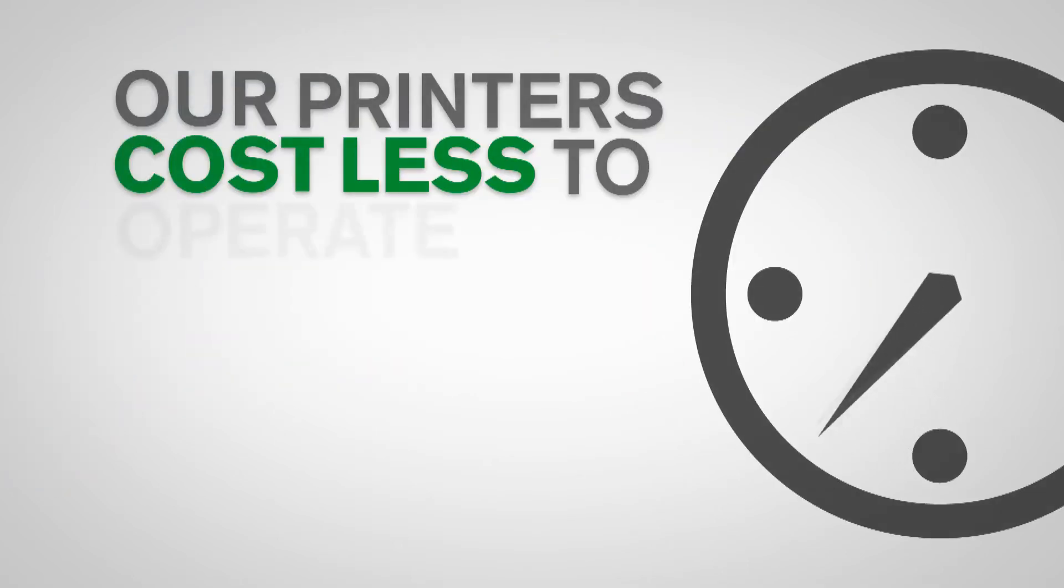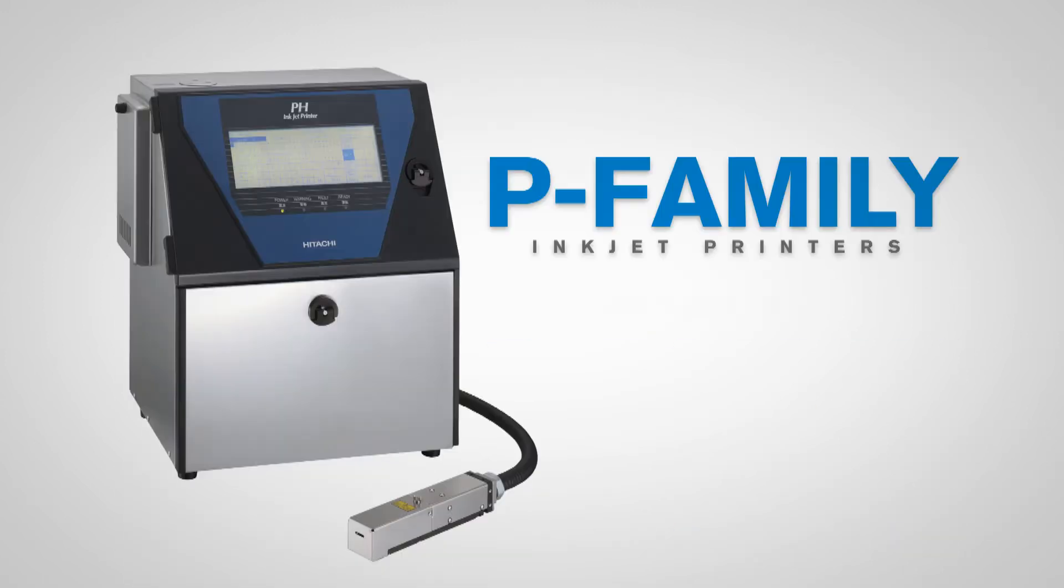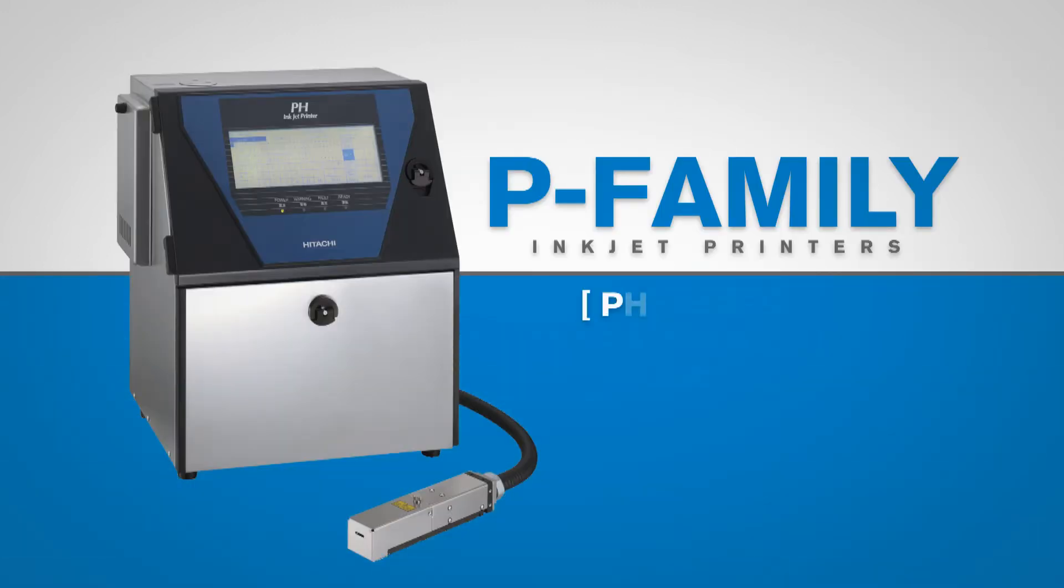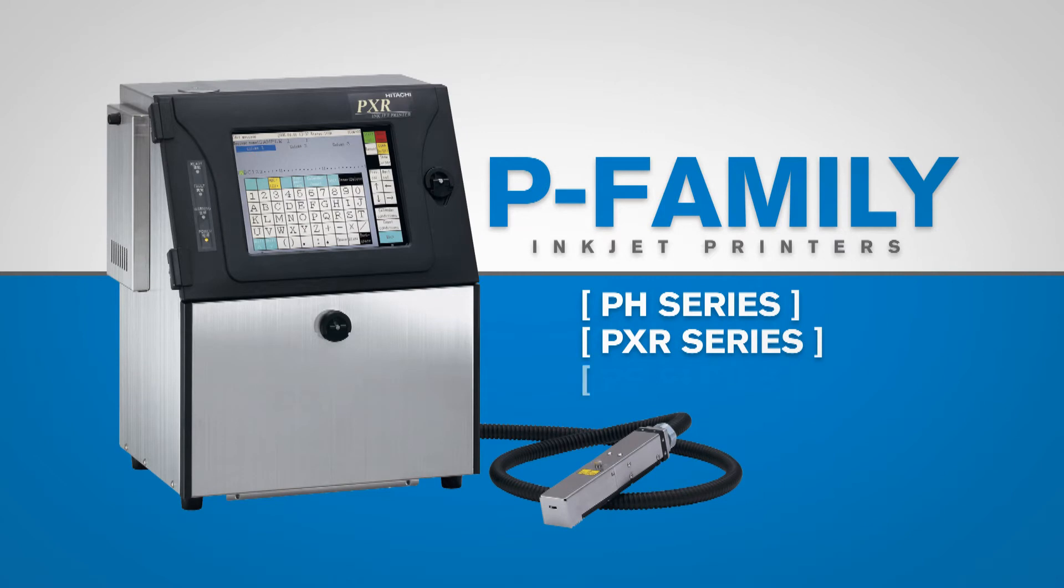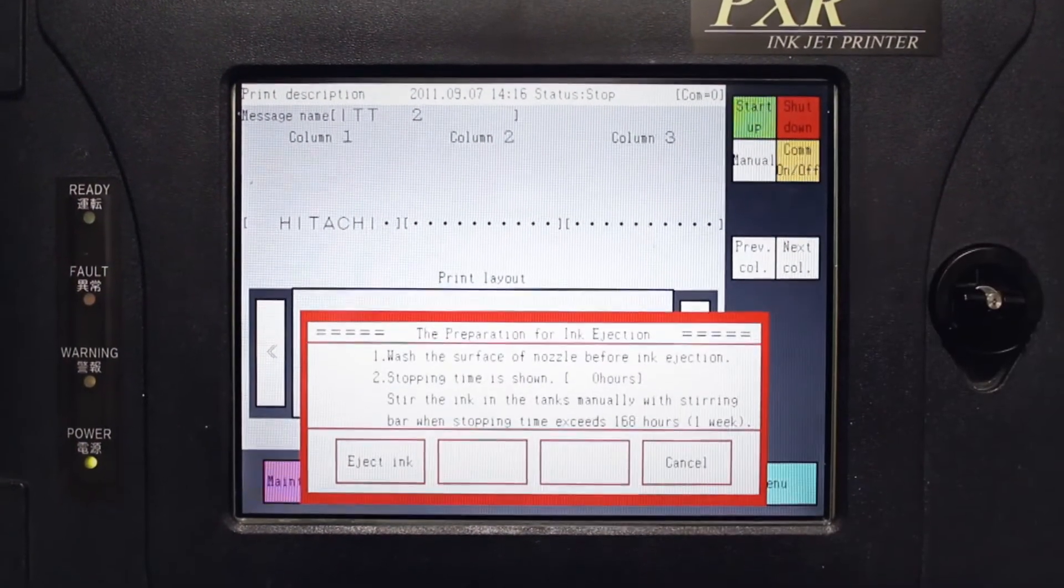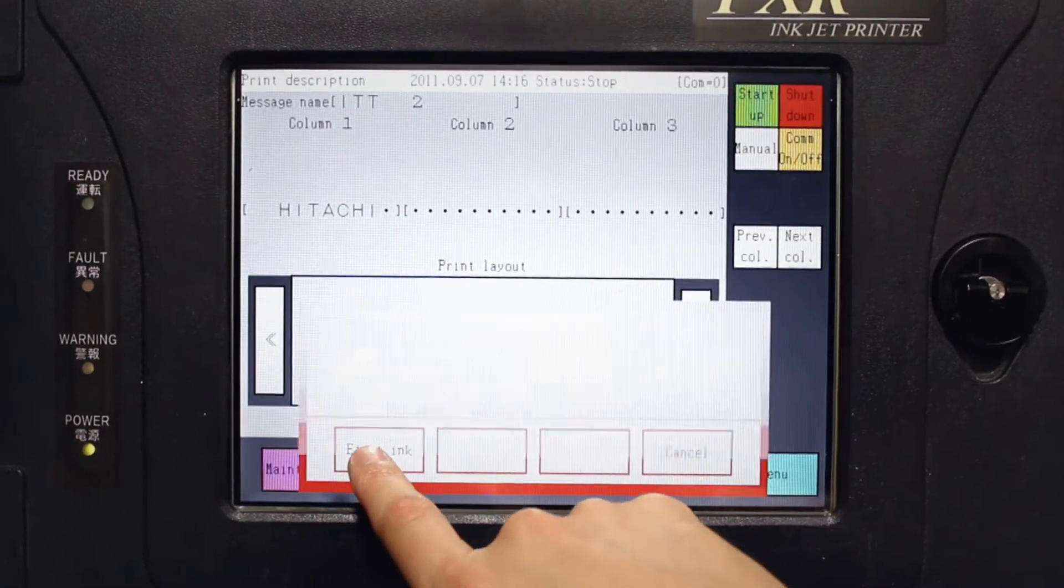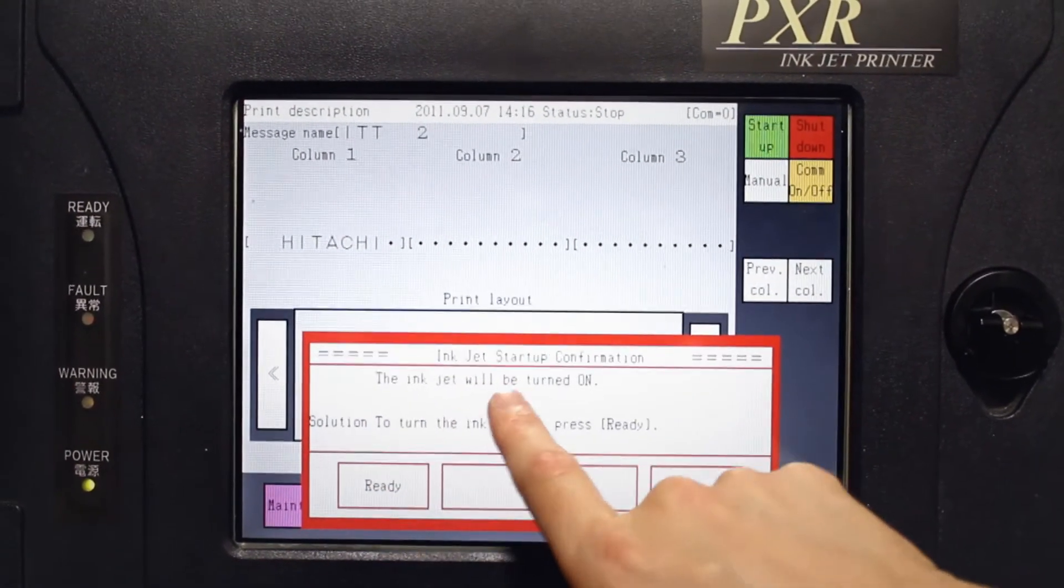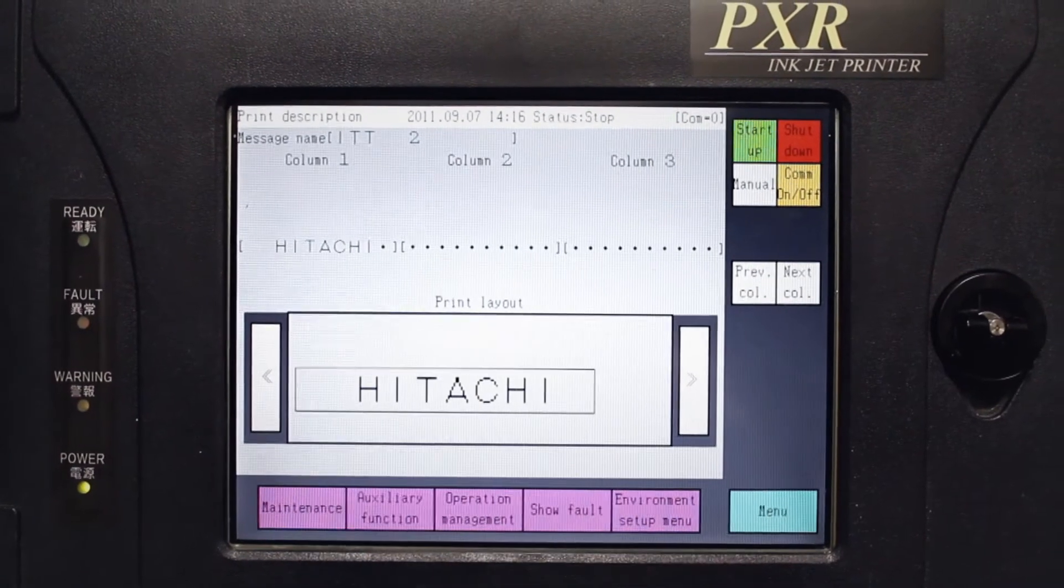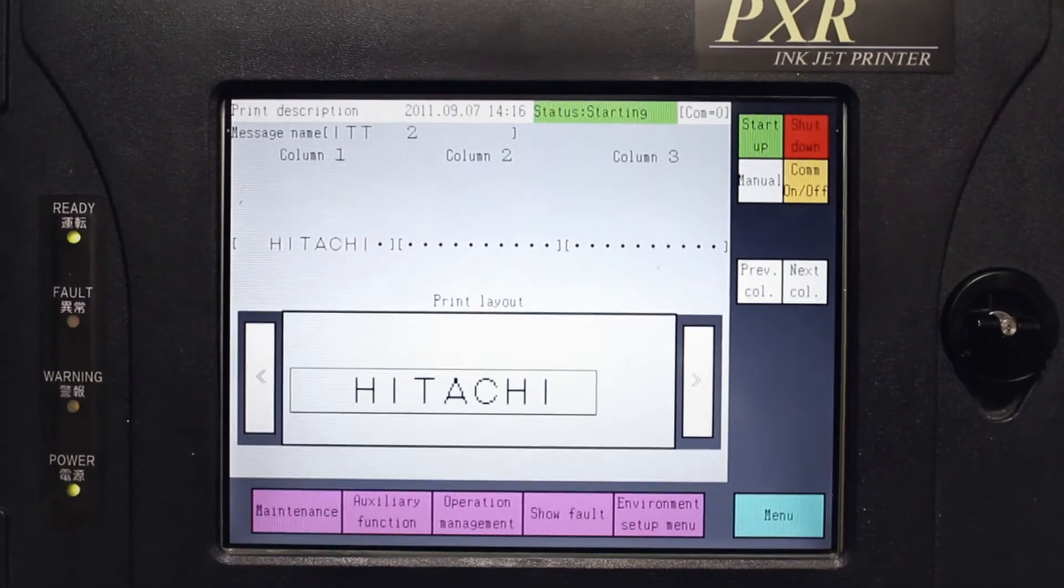Our printers cost less to operate and consequently less to own over time. Our P-Family printers include the PH series, PXR series, and the PB series. All P-Family printers provide an easy to use large LCD touch panel simplifying operation. Touch panel display, intuitive menu selection, and multiple operating languages render P-Family printers an optimal choice for a wide range of applications.